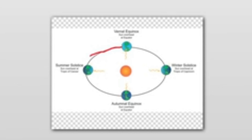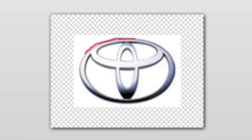Another example of a real-life ellipse is being represented by the Earth's orbit around the sun. This example represents an ellipse with the major axis being the x-axis. I have outlined the ellipse in red. Another example of a real-life ellipse is being represented by the Toyota label. I have outlined it in red.